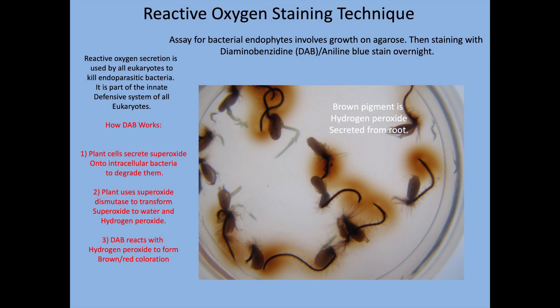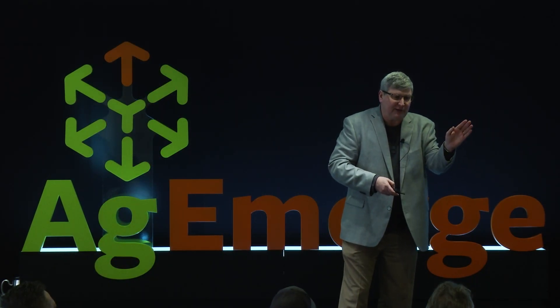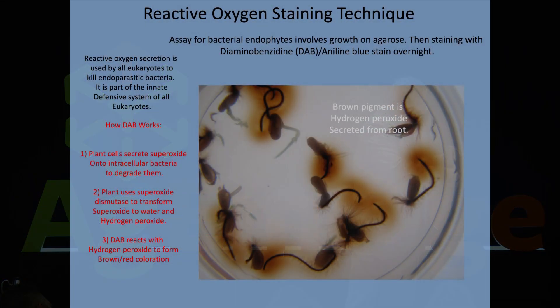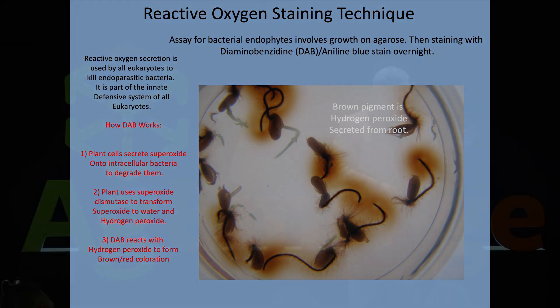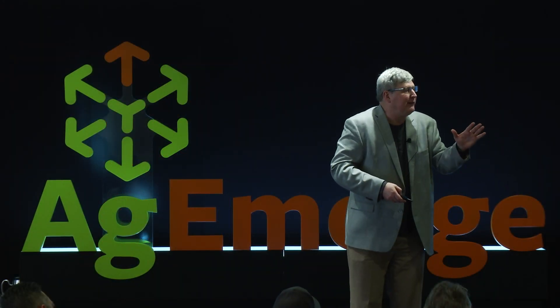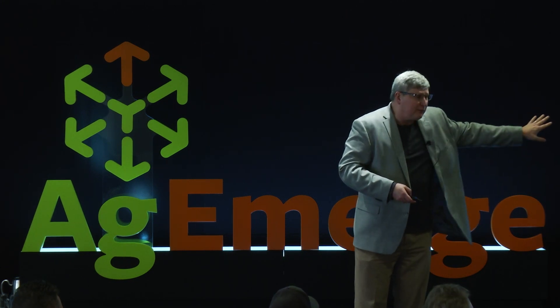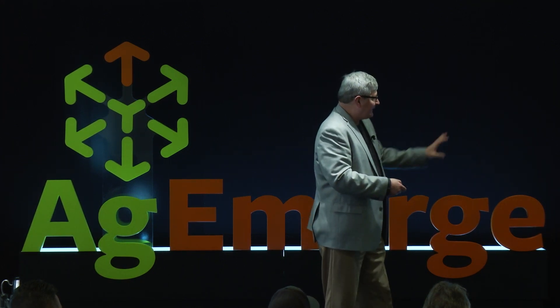In order to visualize these microbes in the plant, we developed a new staining procedure — basically a reactive oxygen staining technique. We use a special chemical called DAB that will stain brown wherever reactive oxygen is present. You can see these seedlings in agar here, and that brown is where reactive oxygen is present. When these microbes are in the plant, the plant reacts by secreting reactive oxygen onto them, so we're able to see these microbes — whereas before they were almost invisible. Now we can actually visualize them with this technique.